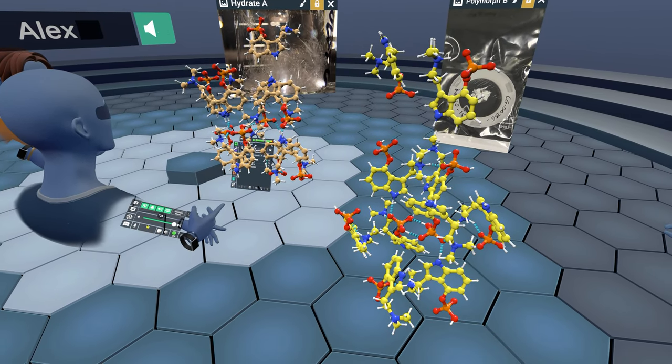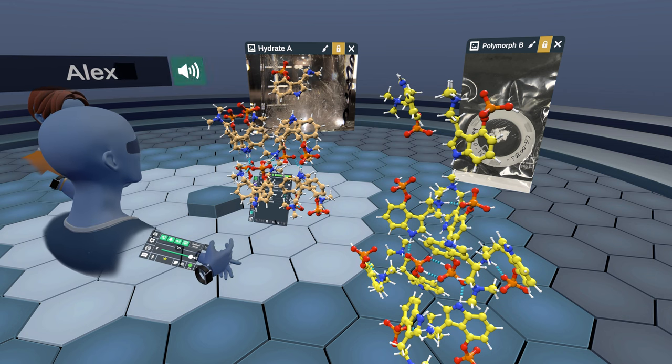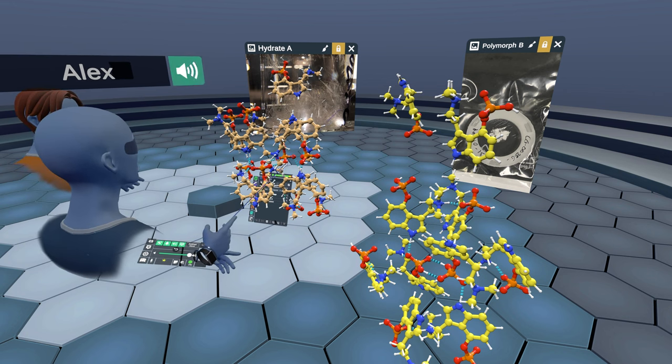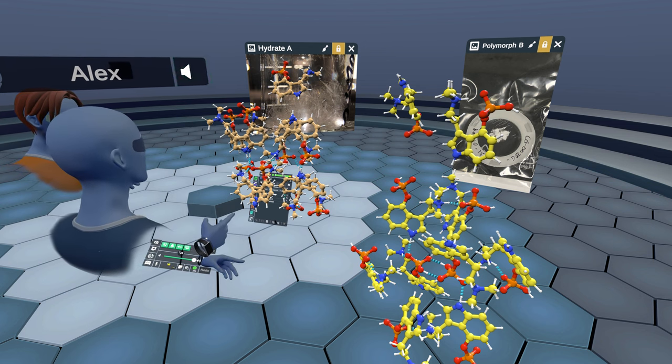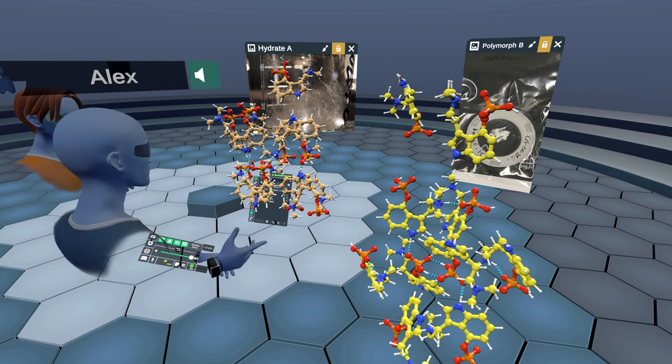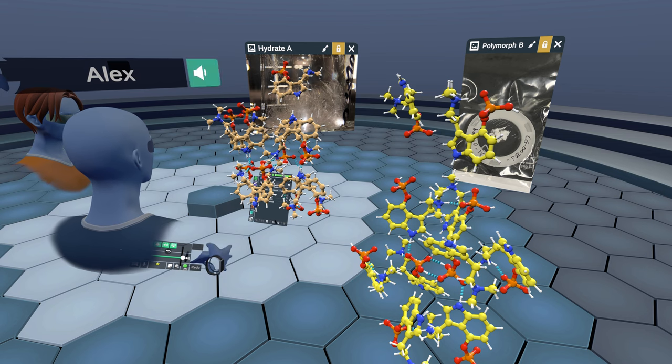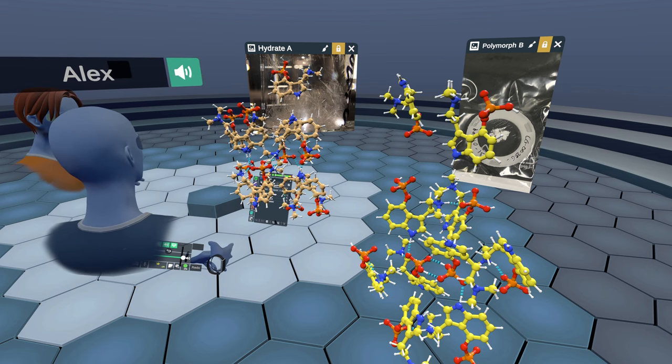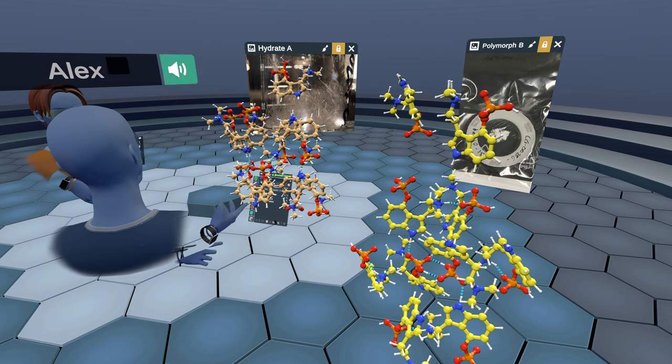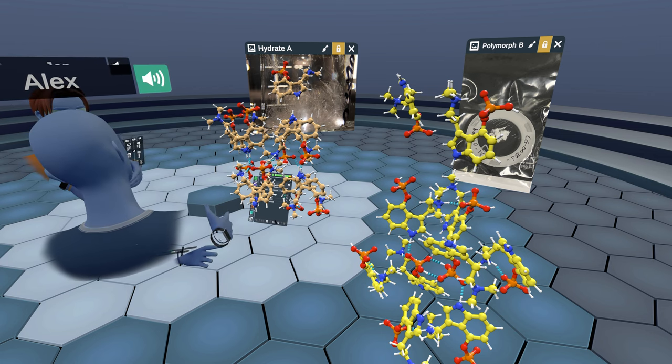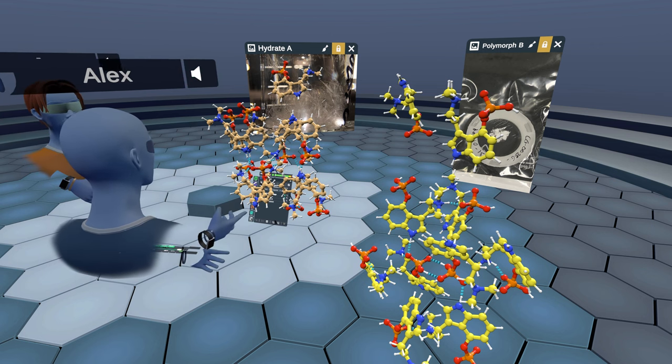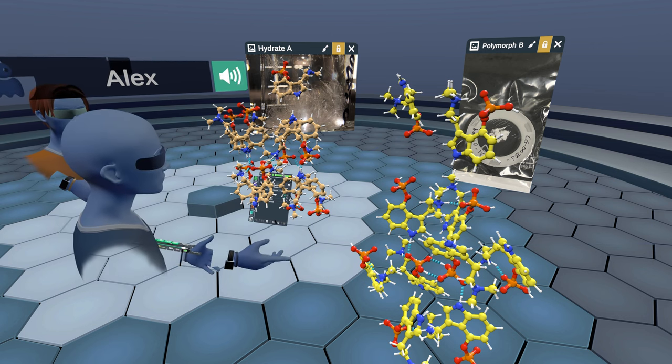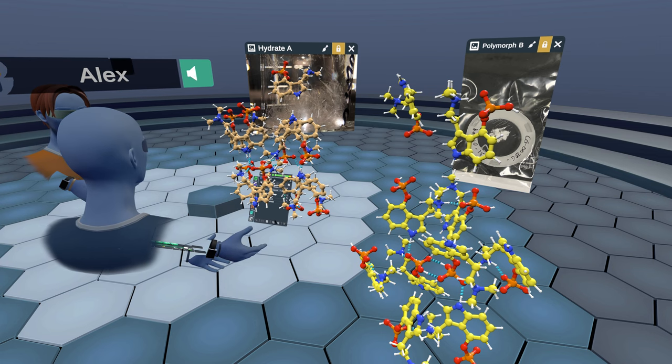But ultimately, what that allowed us to do in the manuscript, once we had the solved crystal structures in hand for the hydrate polymorph A and polymorph B, was to use a technique called Rietveld analysis. So once you have a crystal structure, you can calculate that powder pattern backwards. So you can essentially predict what the powder pattern would look like for any one of these crystal forms.